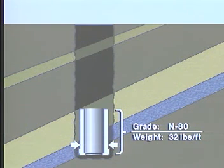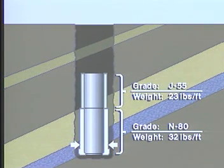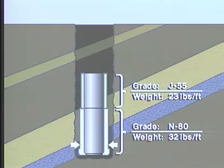This weight and grade of casing is extended up hole until a point is reached where the next lightest or less expensive casing will support the external collapse force, considering the reduction in strength caused by the weight of the lower section and again using an appropriate safety factor.